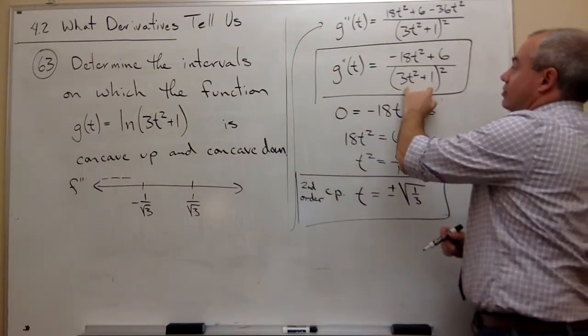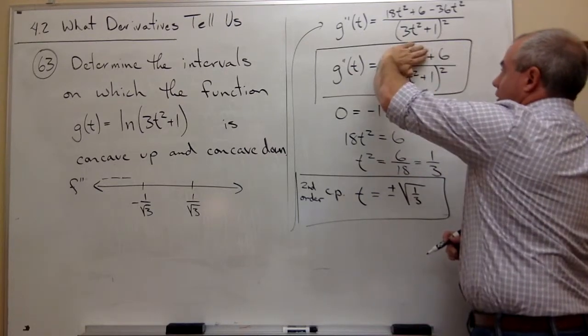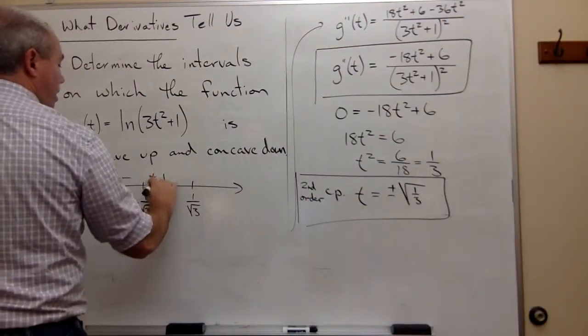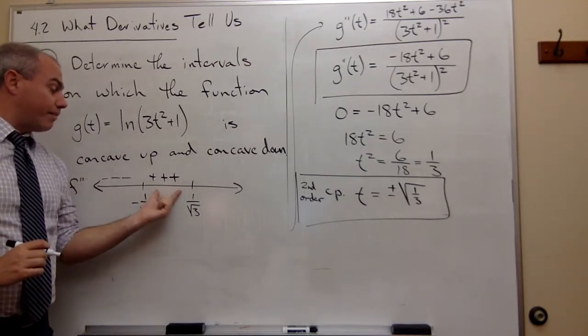What if I plug in 0? Remember, the bottom doesn't matter. It's always positive. So if I plug in 0, that's 0, and I get positive 6 over a positive. That's positive. So on this interval, I get positive values.